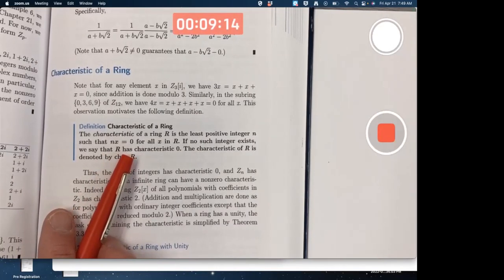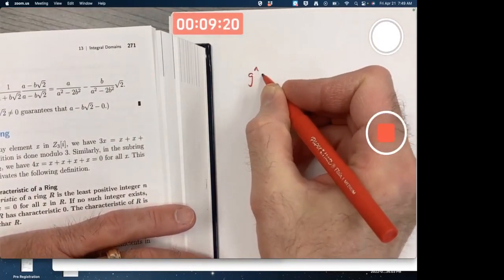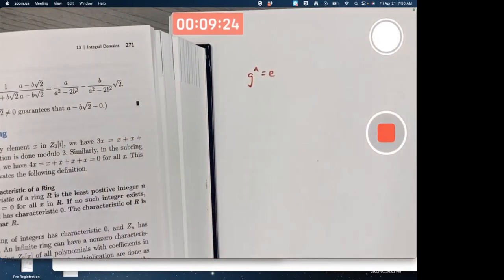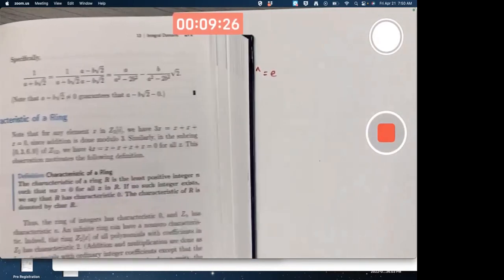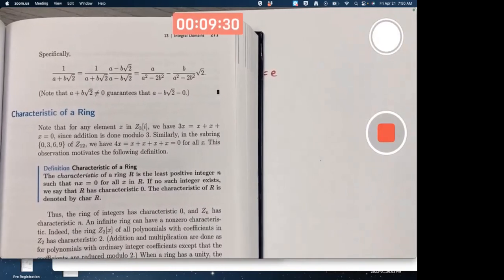You could talk about this in group theory. And if you were talking about it in group theory, you would be focused on an equation like this instead, g to the n equals e. So we could talk about it in group theory, but it's safe to ring theory here.